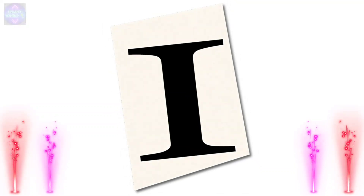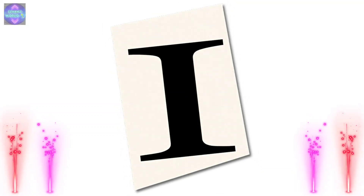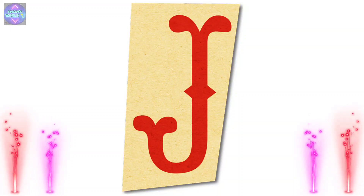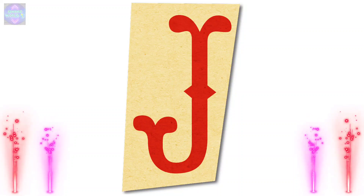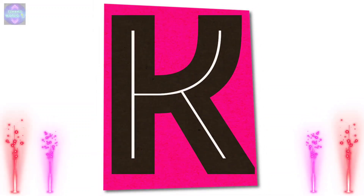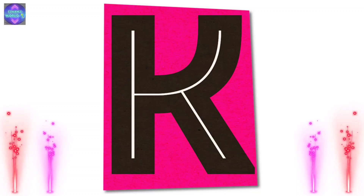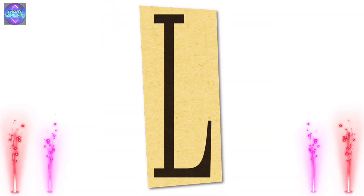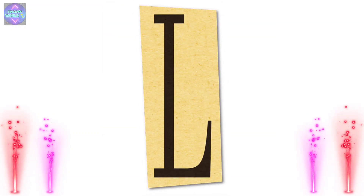I. I for ice cream. J. J for jug. K. K for kite. L. L for lion.